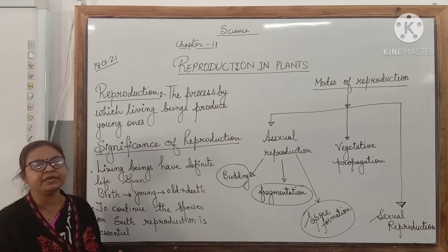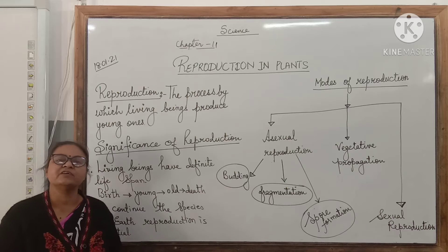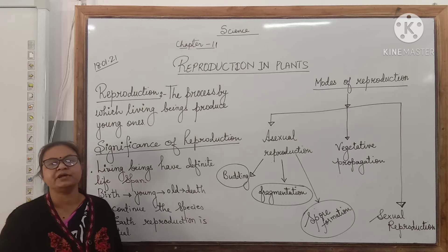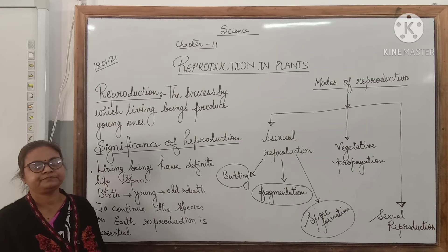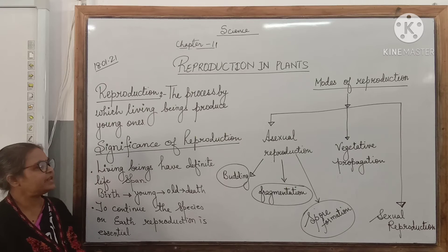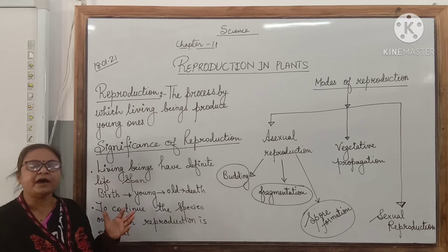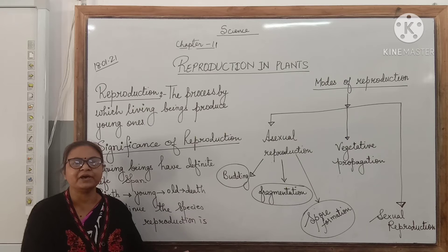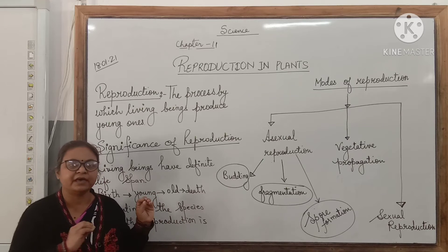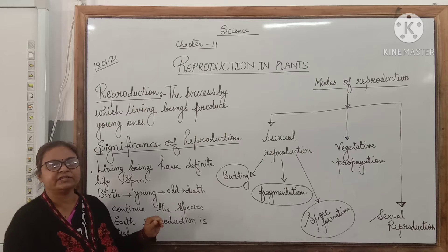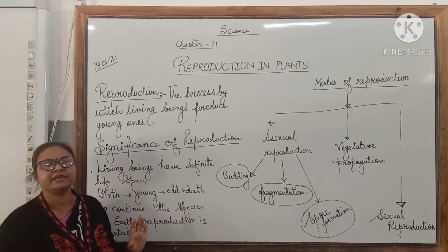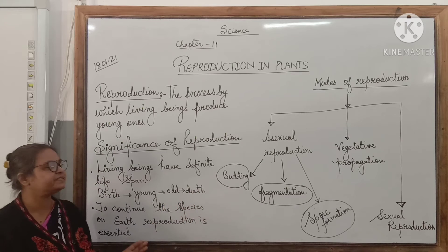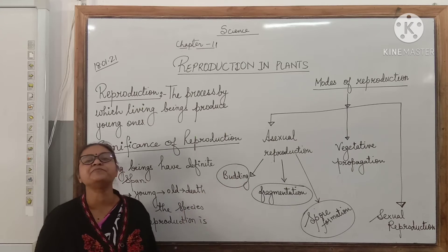In asexual reproduction, only the single parent is able to give rise to young ones of its kind, and the young one will be exactly similar to the parent. Asexual reproduction occurs in smaller, lower-type plants like algae and fungi. In higher plants, asexual reproduction also exists but it is called vegetative propagation.